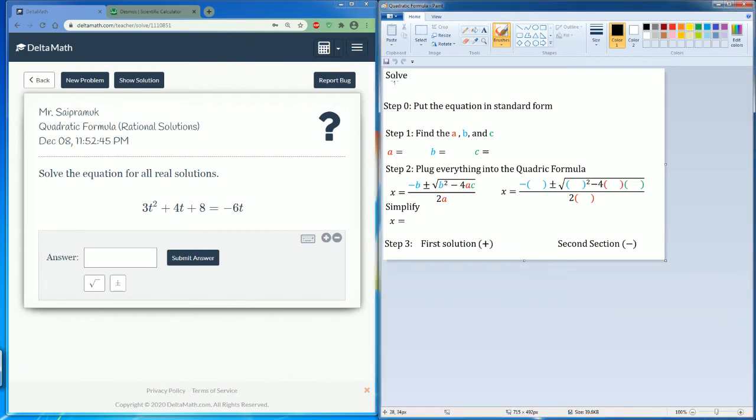I'm going to start by writing down this polynomial which is going to be 3t squared plus 4t plus 8 is equal to 6t.